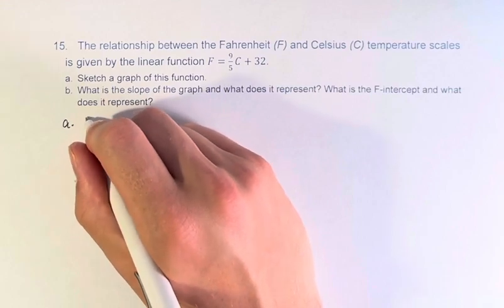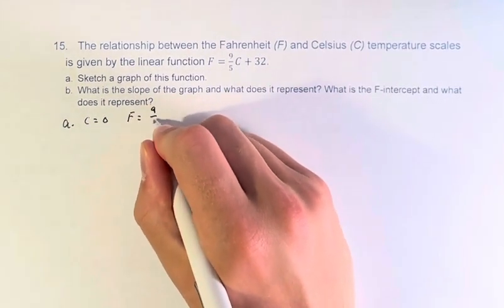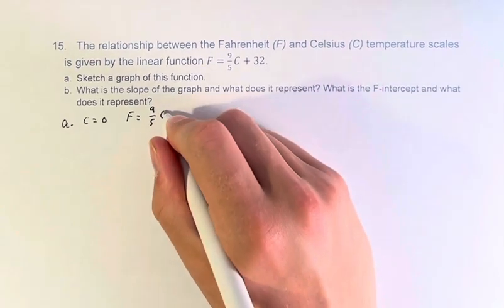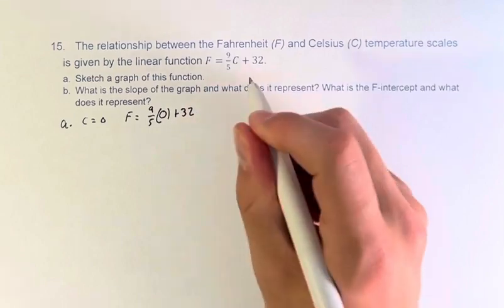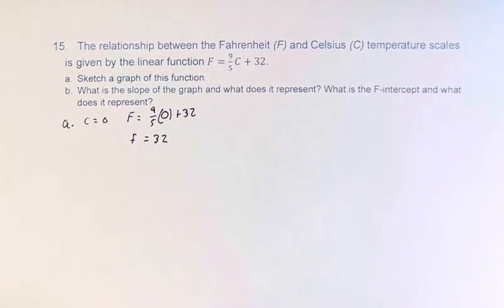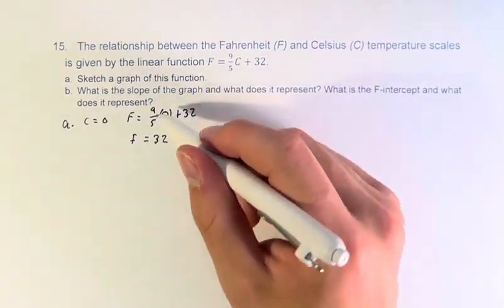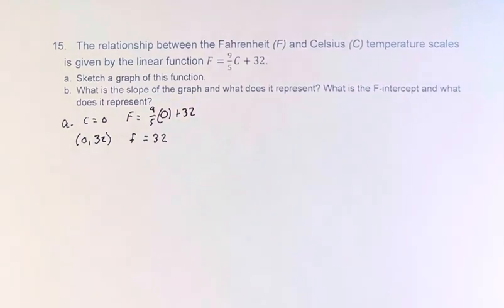So when C equals 0, F equals 9/5 times C, which is 0, plus 32. 9/5 times 0 is just 0, so F equals 32. So if F is 32 and C is 0, then the point (0, 32) is on the graph.